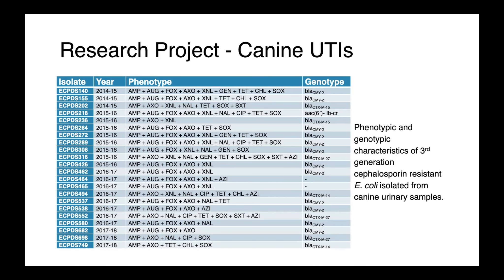When we look at those strains resistant to our third-generation cephalosporins, we saw some really interesting patterns. This is a detailed table showing isolate ID, year collected, resistance phenotype, and the resistance genes identified. The take-home message is that multi-drug resistant isolates are found — they're infrequent — but their presence indicates that susceptibility testing can be really helpful for selecting a therapy.